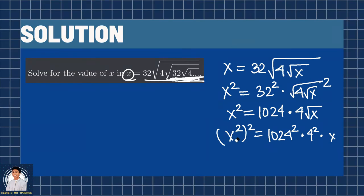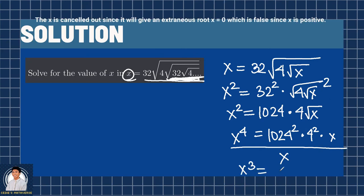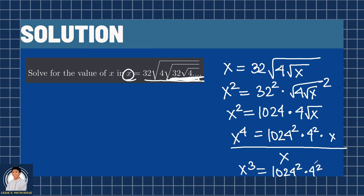And this x squared squared can be transformed into x raised to the fourth power. And now, we have an equation in polynomials. Dividing both sides by x gives us x cubed equals 1024 squared times 4 squared. And now, we can proceed with the last step.